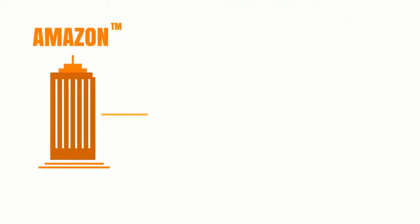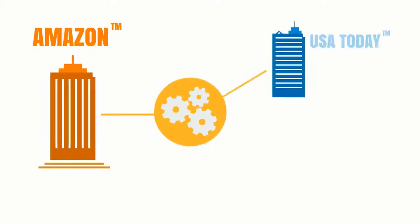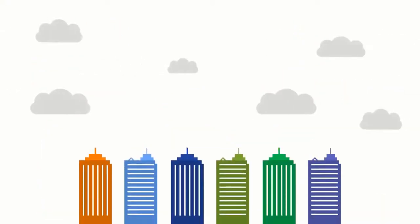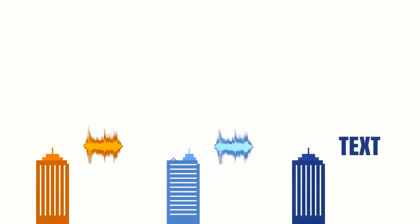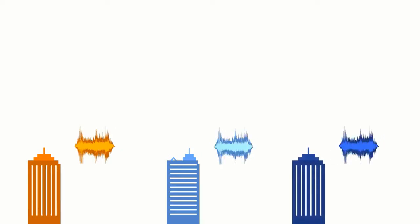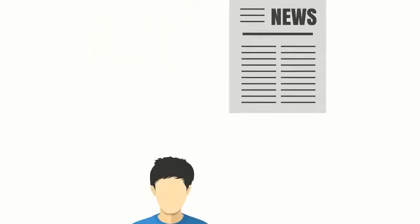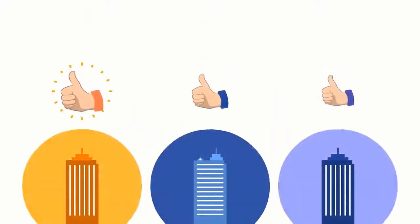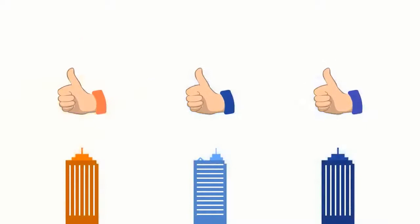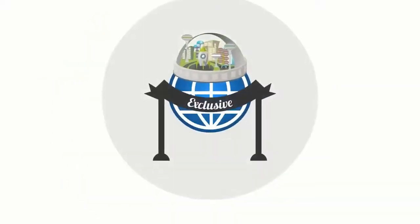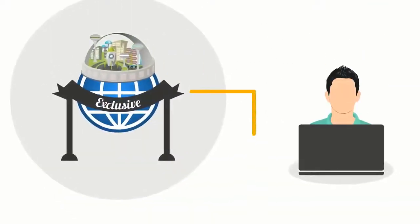Amazon is already working directly with USA Today and Canada's The Globe and Mail, among a number of other companies, to help them voice their texts with that new revolutionary technology. Thanks to Amazon Polly Newscaster, their readers don't have to read but can hear the news and other information. All that is good for top media websites, but until now you could not get access to that groundbreaking tech.